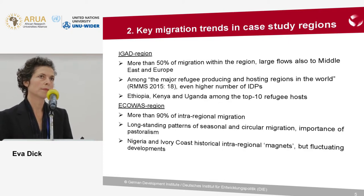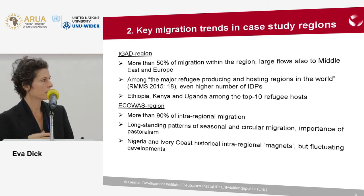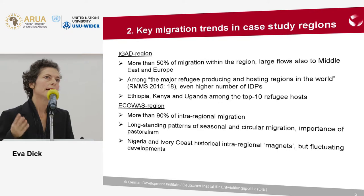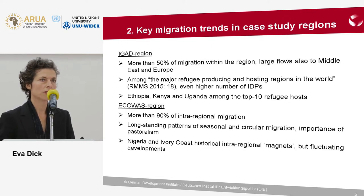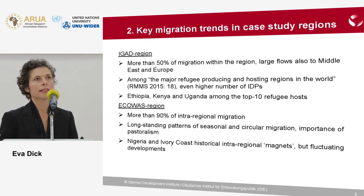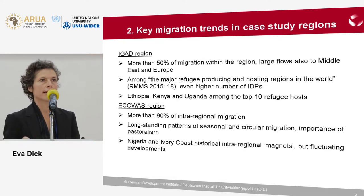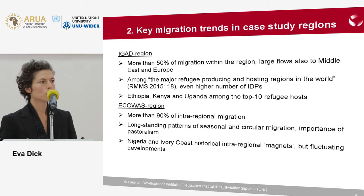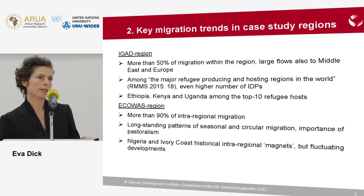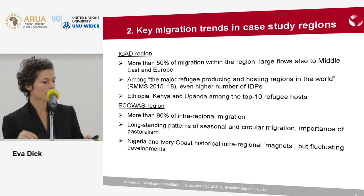In terms of ECOWAS migration patterns, we see a larger level of intra-regional migration — more than 90% of migration occurs within the region. There are long-standing patterns of seasonal and circular migration, and also a very high importance of transnationalism. Nigeria and Ivory Coast are two long-standing migration magnets in the region, but the region has also seen some changing developments in that regard.